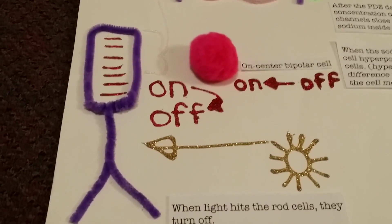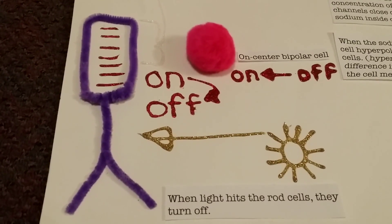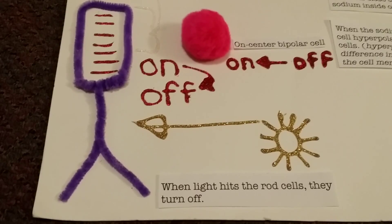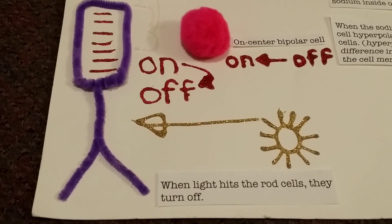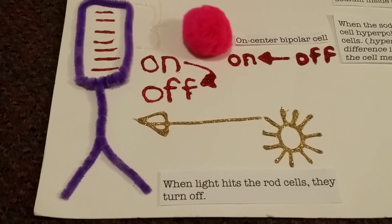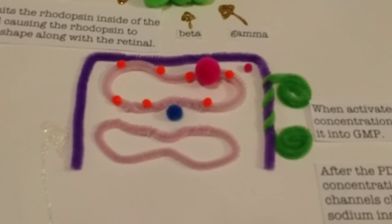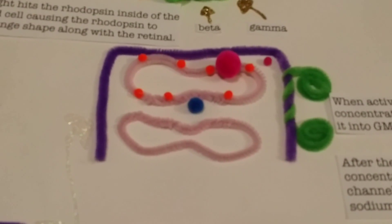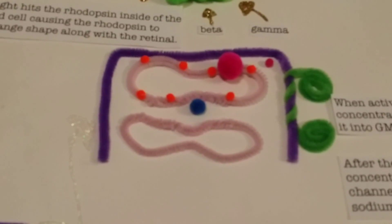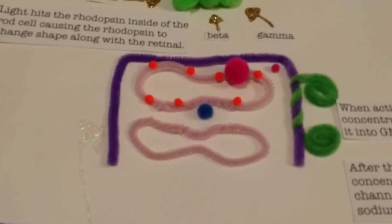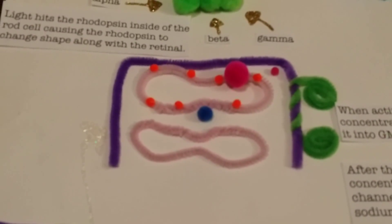When light hits the rod cells, it turns off the rod cells, which is known as the phototransduction cascade. With a closer view of the rod cell, you can see that there are little tiny particles all inside. These are called the rhodopsin.